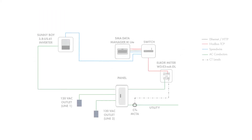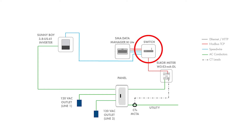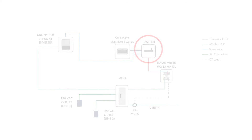Before setting export limitation parameters, all of the equipment must be correctly installed and configured. For the communications connections, SMA recommends wired ethernet connections from the inverter to the same switch or router that the data manager and Elcor meter connect to.